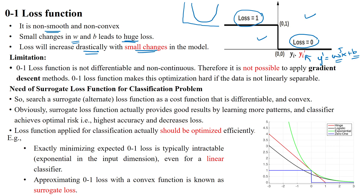This drastic change is a key limitation of the zero-one loss function: it is not differentiable and non-continuous. Because it is not differentiable we cannot use the gradient descent optimization approach — that is why we go for surrogate loss functions such as cross entropy. One more issue is that if the data is not linearly separable we cannot use the zero-one loss function. Since it is unable to differentiate, we cannot calculate gradients, and without gradients we cannot apply gradient descent optimization.